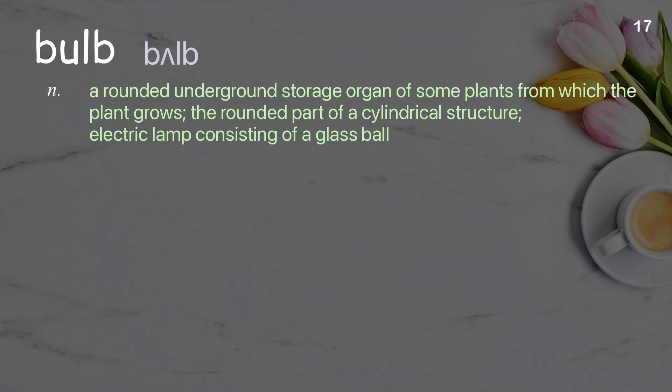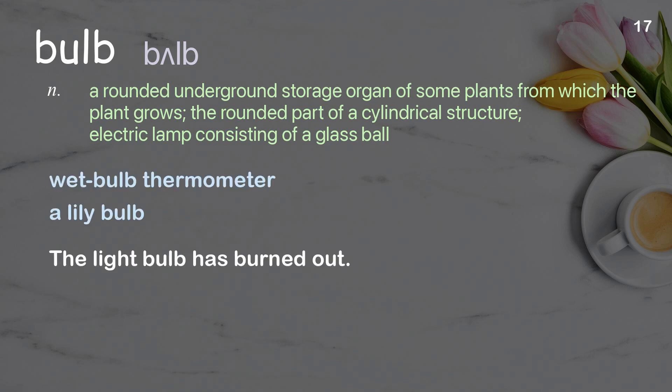Bulb: A rounded underground storage organ of some plants from which the plant grows; the rounded part of a cylindrical structure; an electric lamp consisting of a glass ball. Examples: Wet bulb thermometer, a lily bulb. The light bulb has burned out.